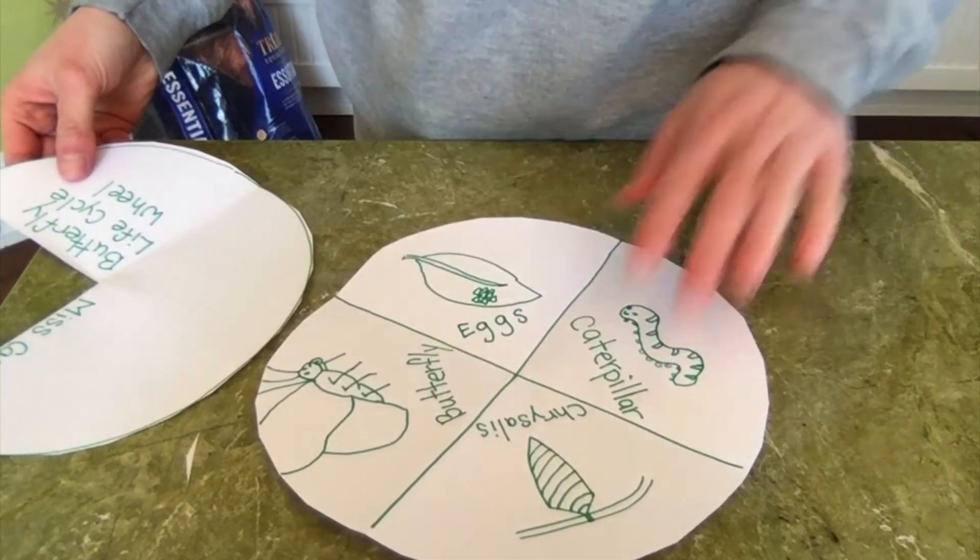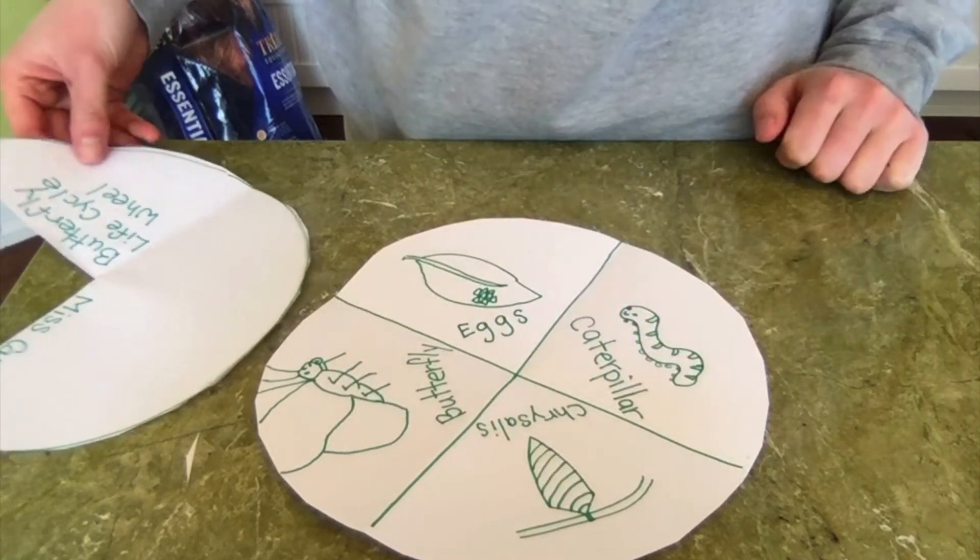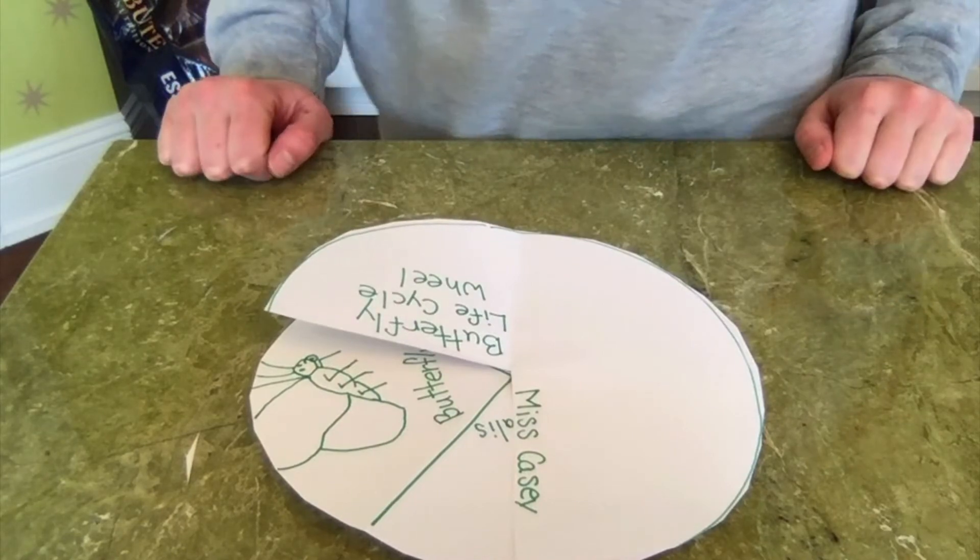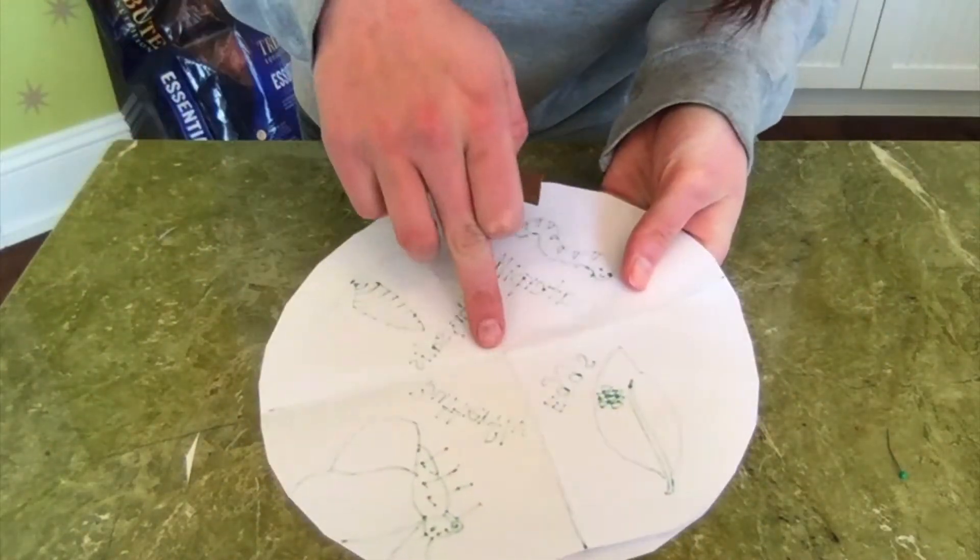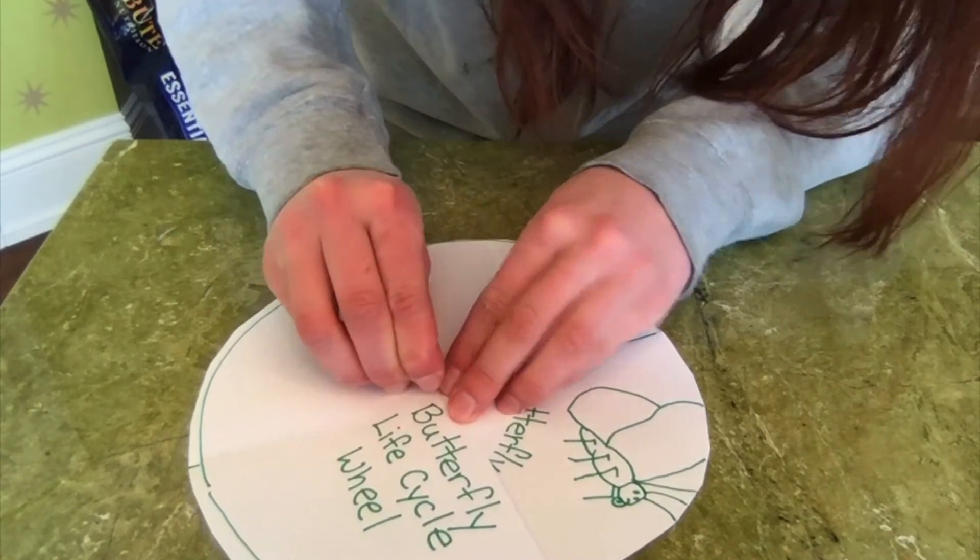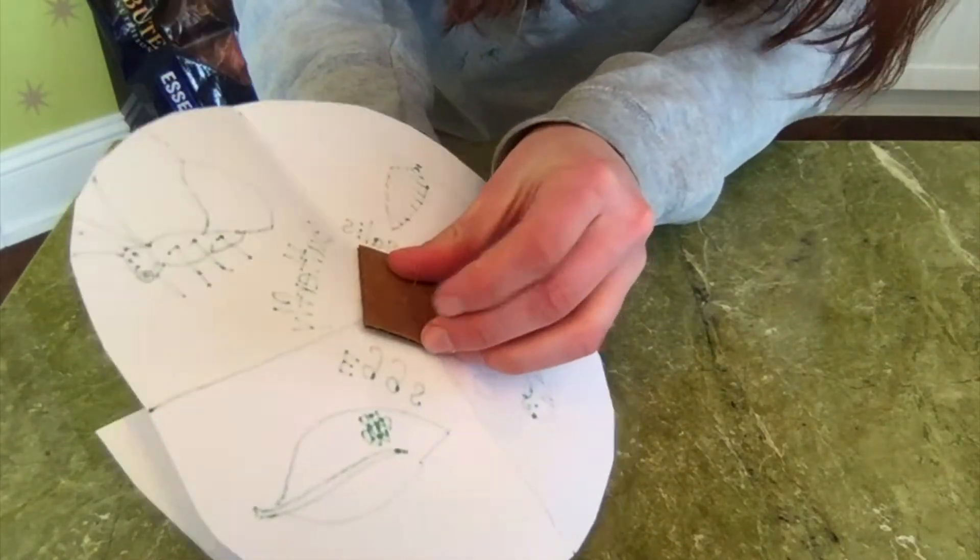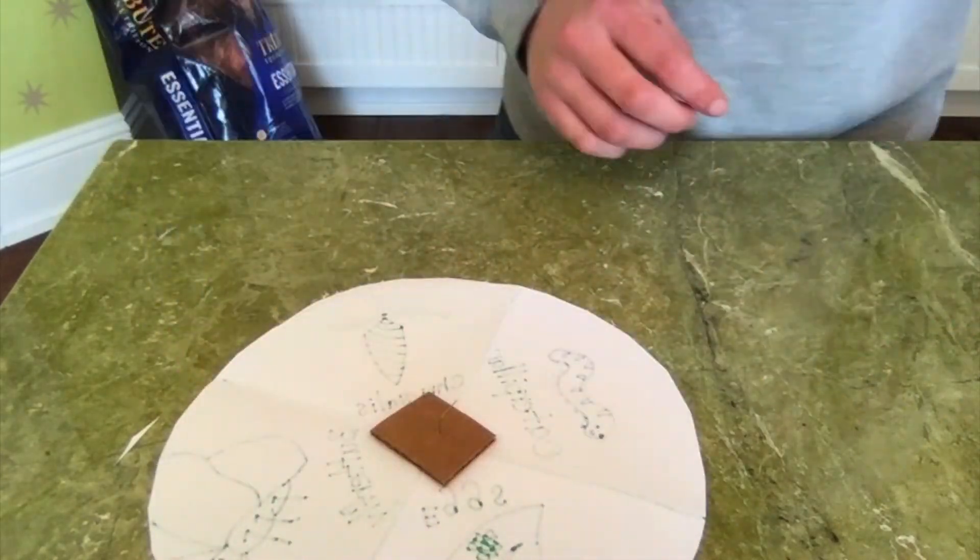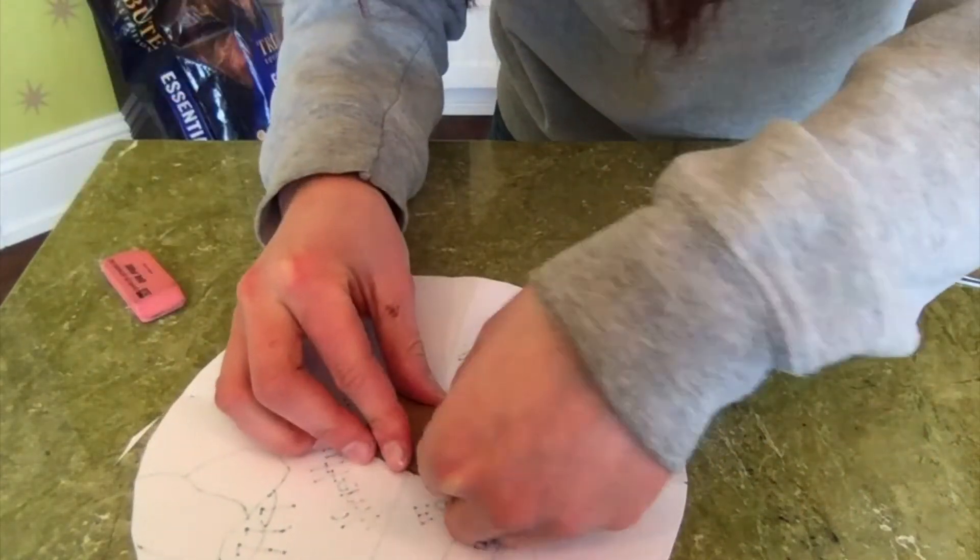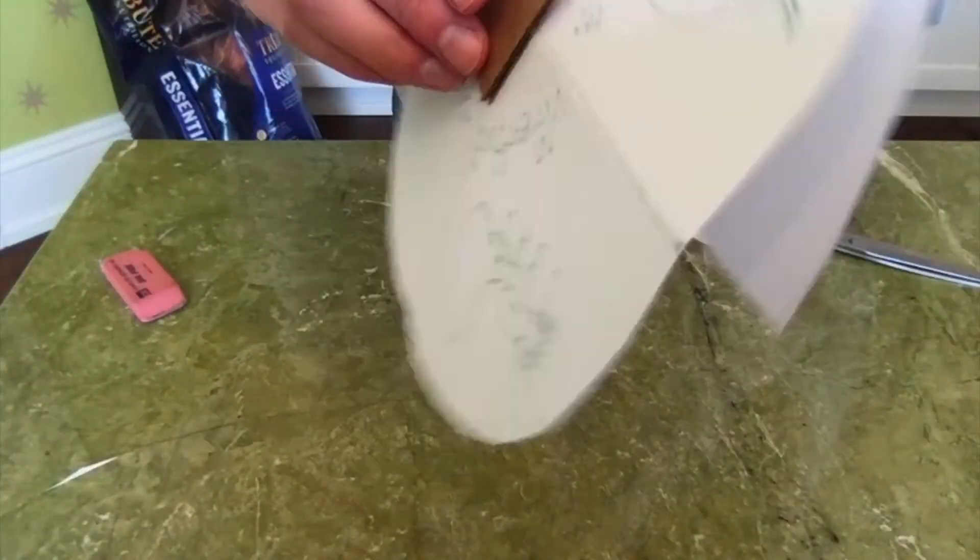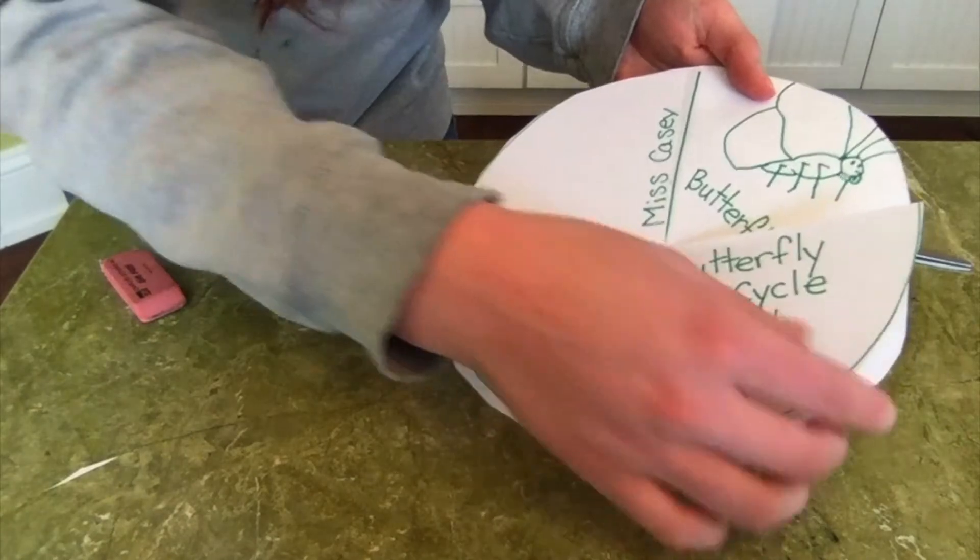So you want your drawing of all the different life stages on the bottom. And then you'll put your cover right on top of it. Now this is normally where you would take your brass paper fastener and you would connect these two pieces of paper together. I did not have a brass paper fastener, so I just made a makeshift one. I do not recommend using this method at home, but I just wanted to show you what it looks like when you have your papers fastened together.